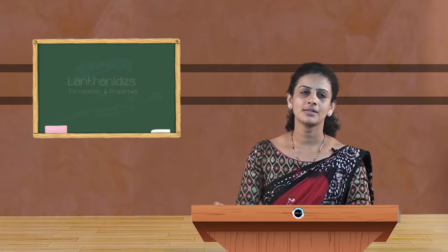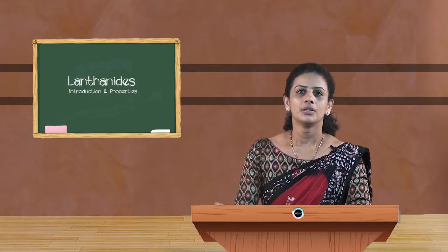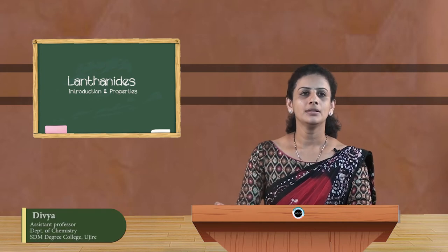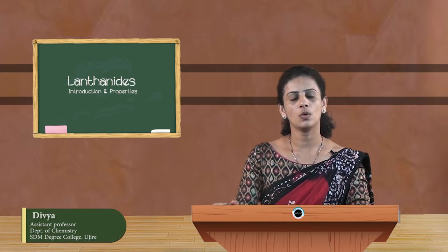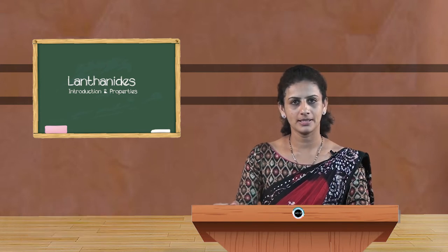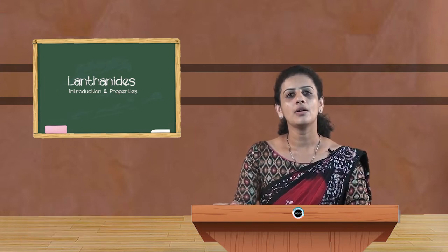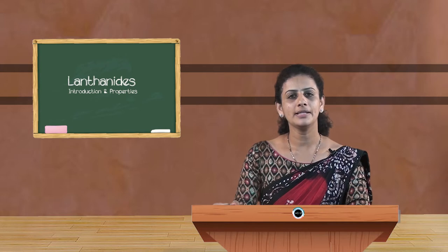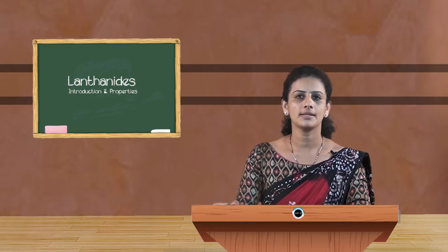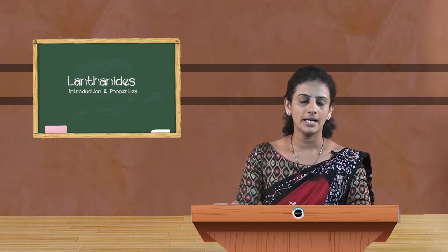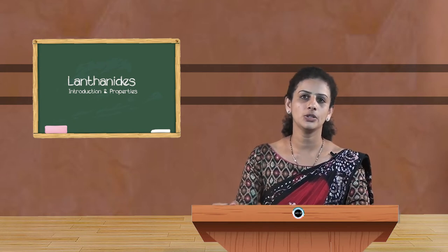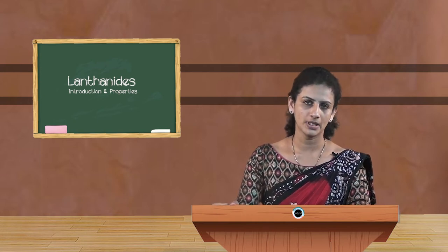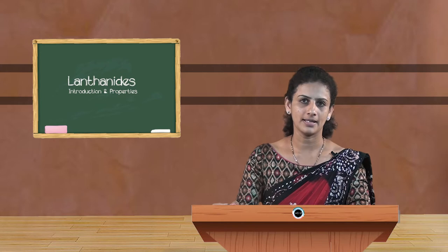Hello students, today I am here to explain F block elements. The elements which have a partly filled F orbitals are called F block elements, and these F block elements are classified into two series: lanthanides and actinides.